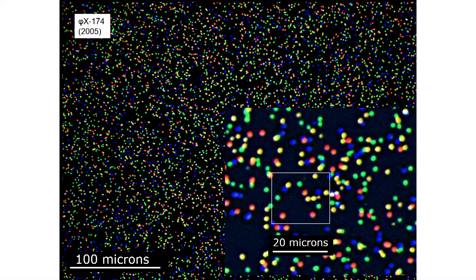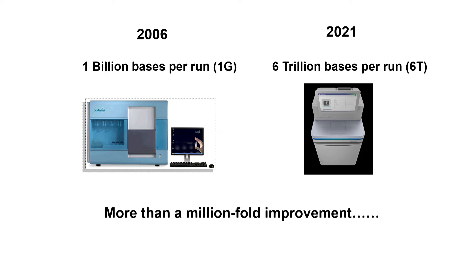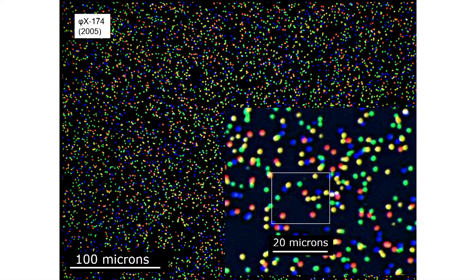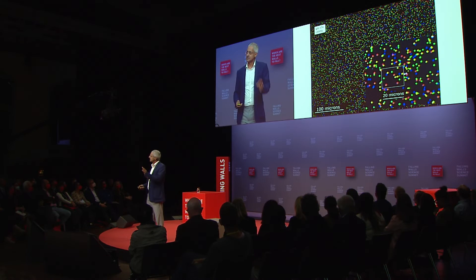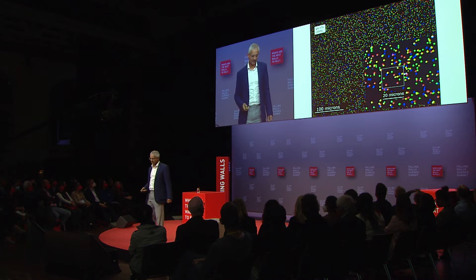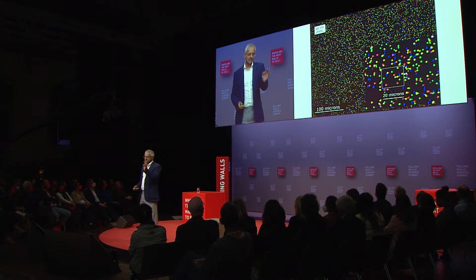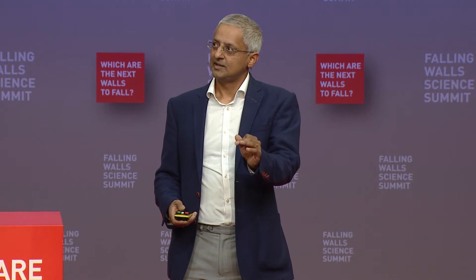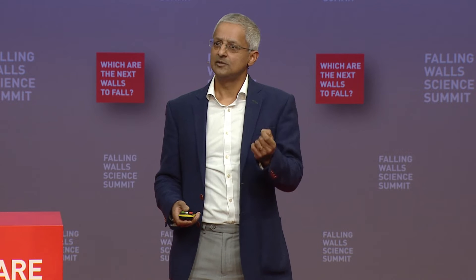This is actually a real image of an early experiment that sequenced a bacteriophage called PhiX174. Each of these spots you see is an image of one fragment of DNA that's been amplified — so it's a single sequence — and the colors that you see are the color that tells you about the building block in that particular cycle.